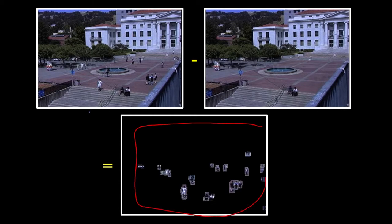This has pulled out all the people moving around in this area nice and cleanly, with the exception of these people because they've been sitting there so long that they just look like they're part of the scenery. And that's what happens with median filtering — anything that stays there for a long time just becomes part of the scenery.